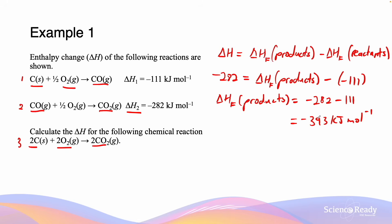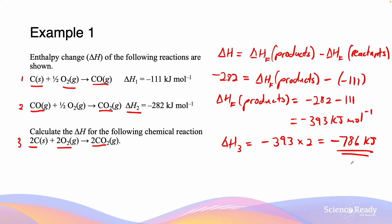However, we are not finished yet, because this delta HF value gives the enthalpy of formation per mole of carbon dioxide. In equation 3, there are 2 moles of carbon dioxide being produced from its constituent elements, so we multiply by 2 to get minus 786 kJ. This is the first method for answering this question.